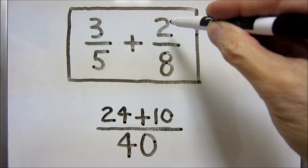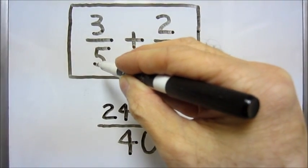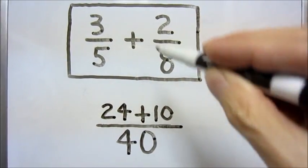Then we go up to the numerator of the second fraction, multiply it by the denominator of the first fraction, 2 times 5 to get 10.